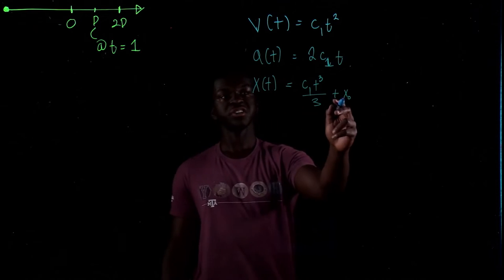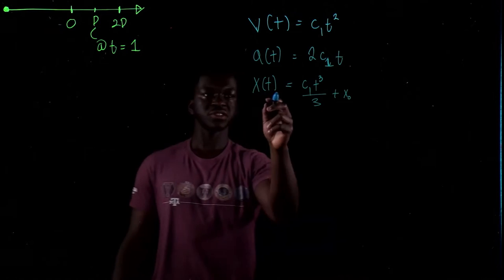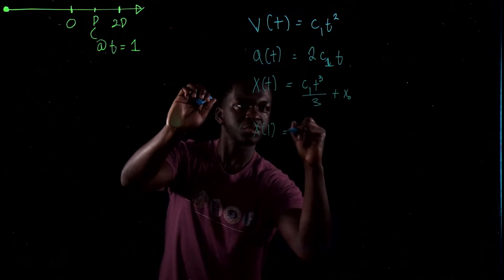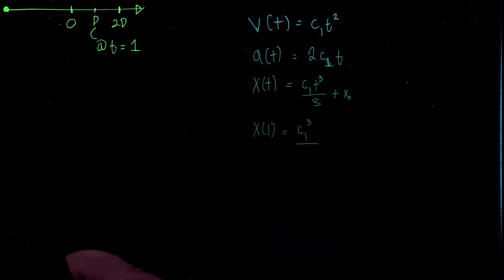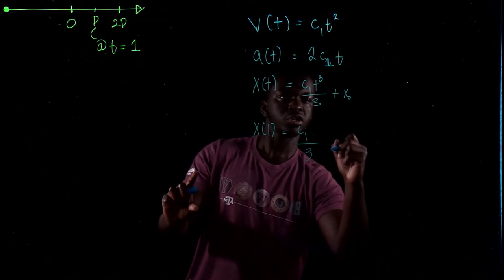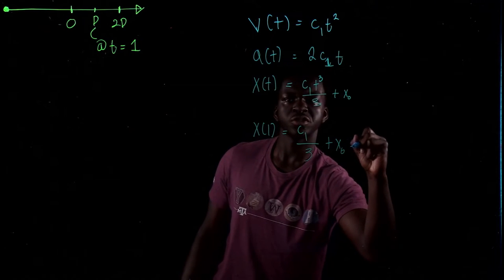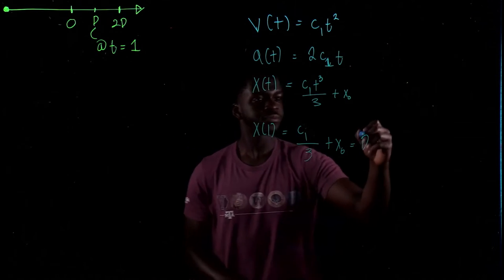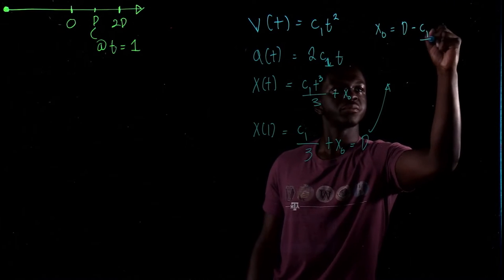Now let's write the position, which is going to be the integral of c1t squared, which is c1t cubed over 3 plus x0. We're trying to find what x0 is, since that is a constant, and we can use what they gave us: at t equals 1, x is equal to d. So let's set t equal to 1. x of 1 is equal to c1 over 3 plus x0, which equals d.